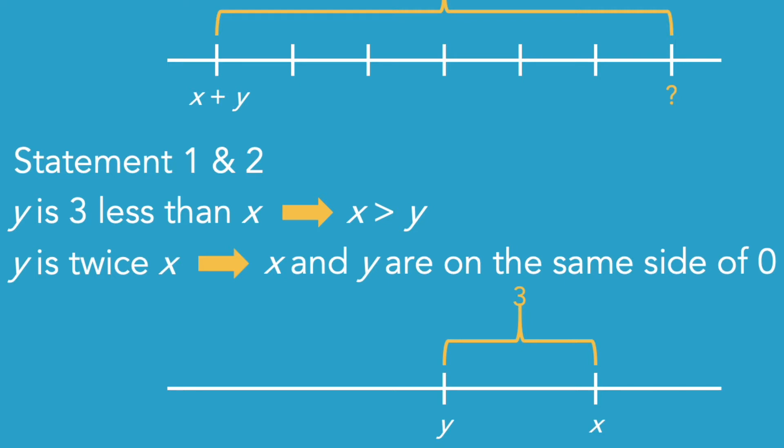Specifically in this case, we're told that one of them is twice as big as the other, and the difference between them, let's say, is 3. Well, are they 3 and 6, or are they negative 3 and negative 6? We wouldn't know.